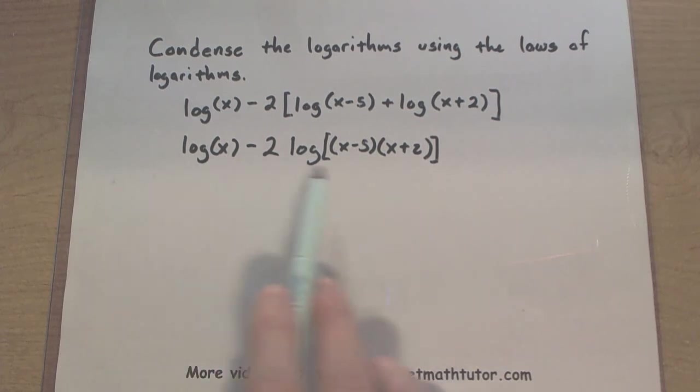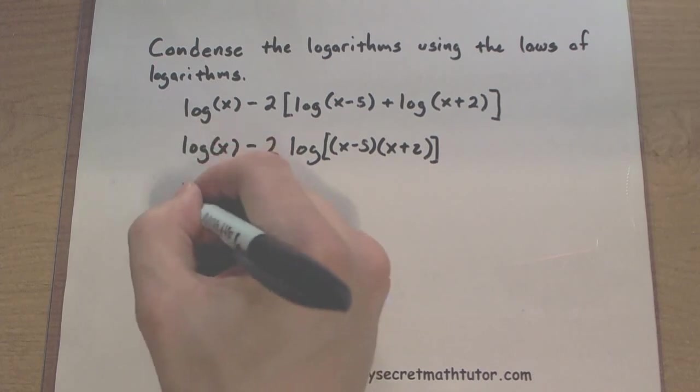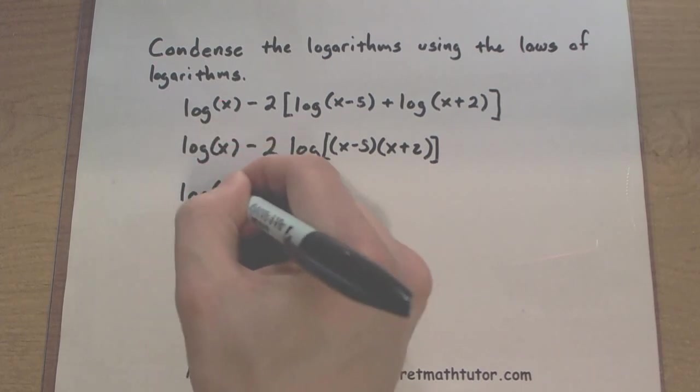Alright, now let's go ahead and scan through. Well, it looks like I have a 2 being multiplied in front of this log. When we have a constant multiplied out front,